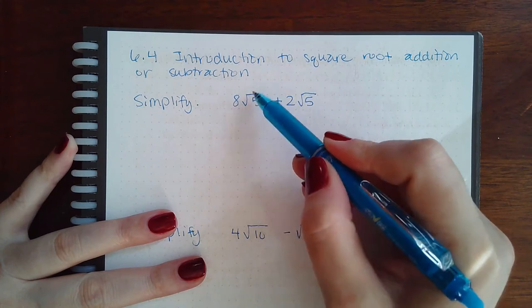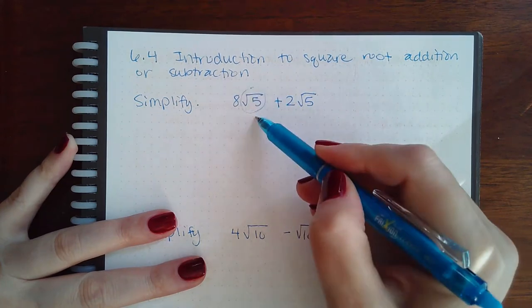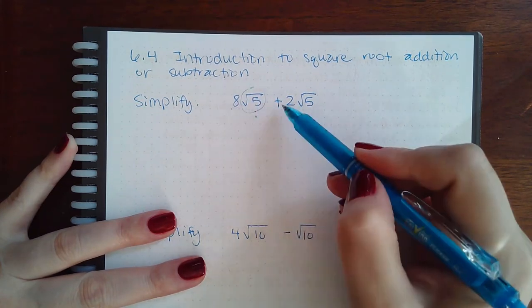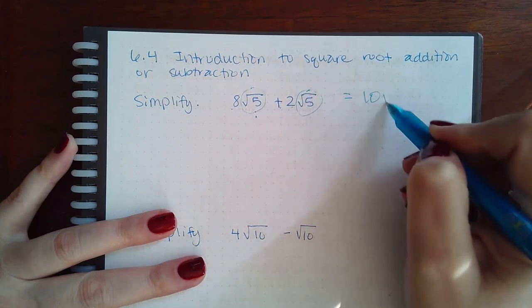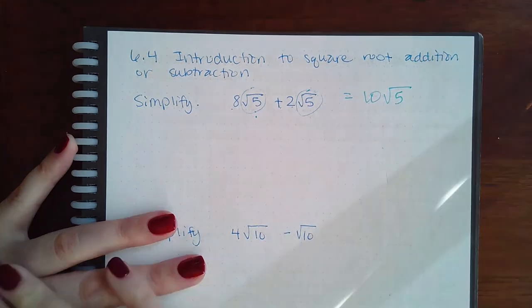You basically have eight of these things—whatever they are, we call them apples. So eight apples plus two more apples means you have ten apples. And what do those apples look like? They look like square root of fives.